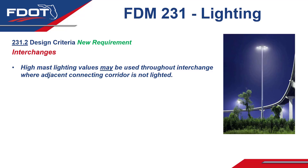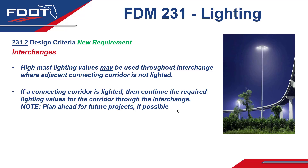Next in this section, we have the new heading of interchanges with some new associated requirements. For interchanges, high mass lighting values may be used throughout the interchange where adjacent connecting corridors are not lighted — this typically happens in more rural contexts. If a connecting corridor is lighted, then you'd continue those required lighting values for the corridor right through the interchange. If either the mainline or the side street passes through the interchange and has lighting, you'd use those consistent lighting values through the interchange. It may be best to plan ahead and use corridor values for lighting if corridor lighting is likely to be added in the future.